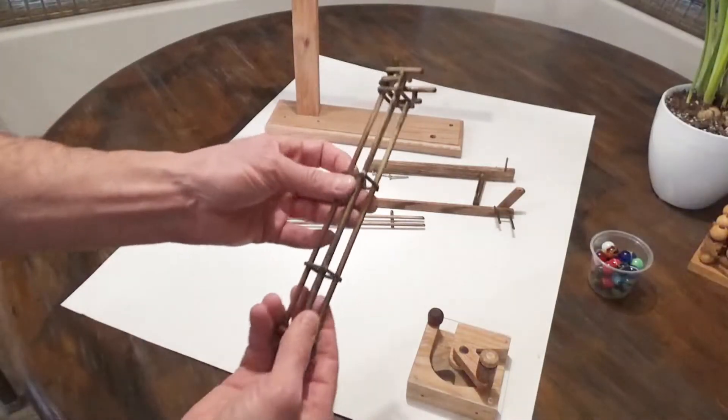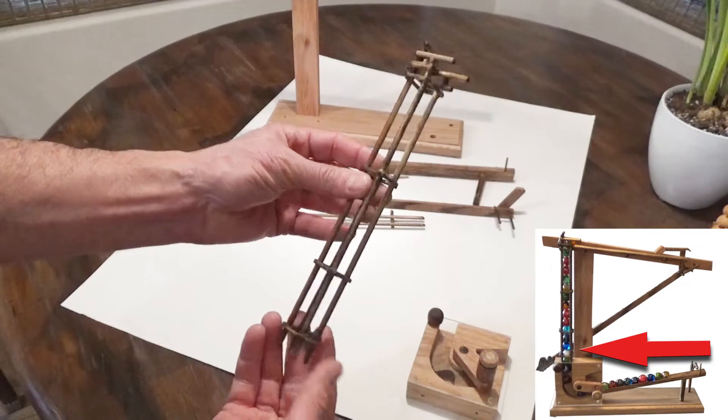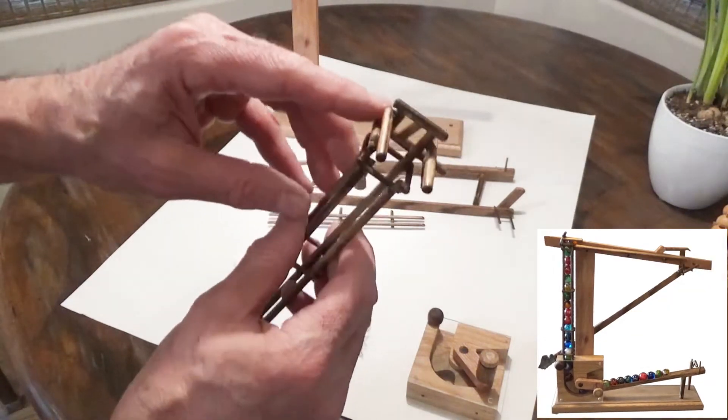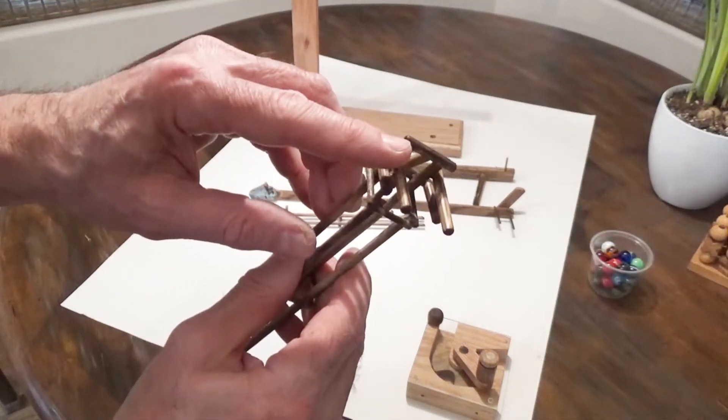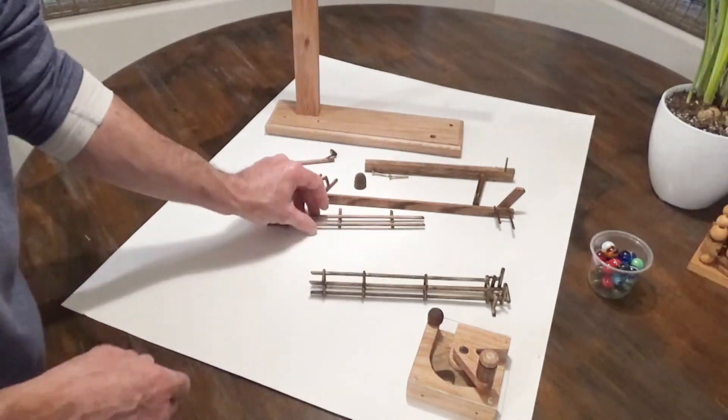Here's the elevator shaft. It takes the marbles from the pump up to the top rail. This part gives them a little nudge in that direction. After rolling across the top rail,